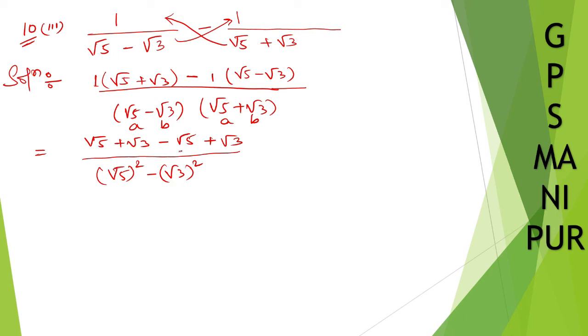I hope you can understand this much. Root 5, root 5 cancelled. So what we are left with is root 3 plus root 3. We can write down 2 root 3 divided by square and root cancel, square and root cancel. So 5 minus 3, it is 2.